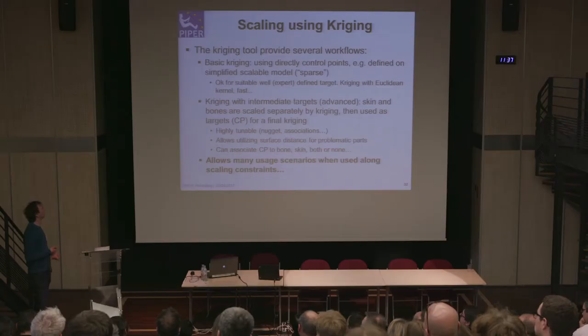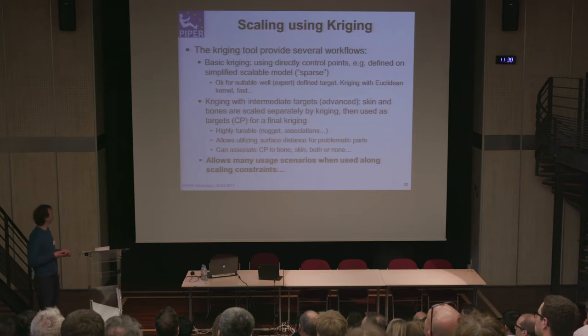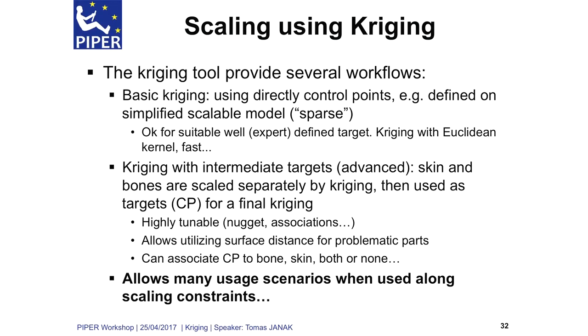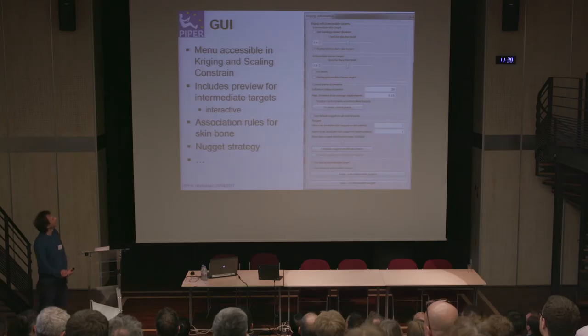Rigging with intermediate target is proven quite useful because you often have targets for the skin — many anthropometric measurements are measured on the skin — but don't have appropriate measurements for the bones, or vice versa. There are also parameters for decimation of control points done automatically: if you're doing a local transformation like changing just an arm, you don't need control points on the legs. You can also use the surface distance discussed earlier to figure out your own workflows.